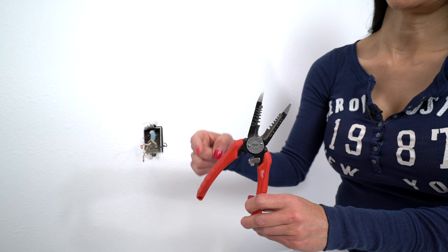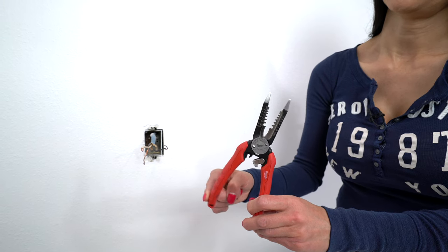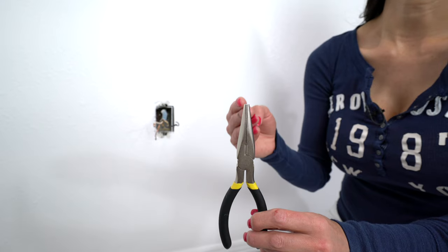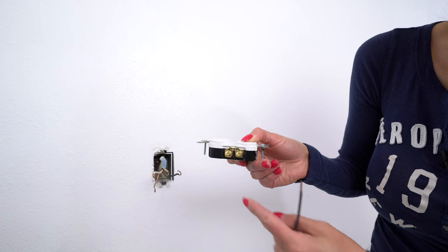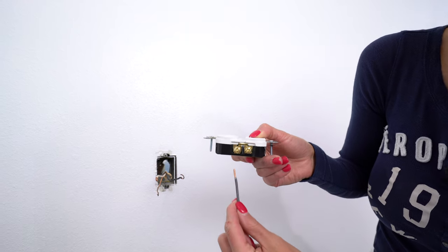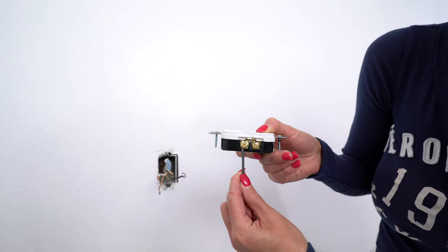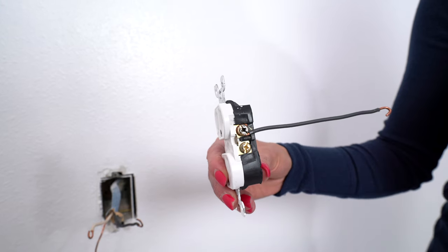It also has a spring that makes it really easy to use, as opposed to normal pliers that you have to open yourself every time. Some outlets have this extra little tab on them where you can just stick the wire in underneath it and tighten it. In which case, you don't have to loop it like these ones.